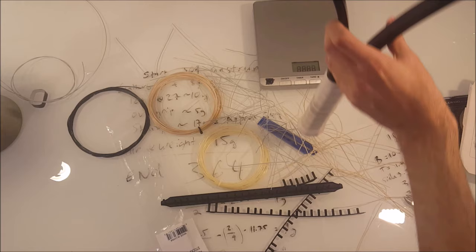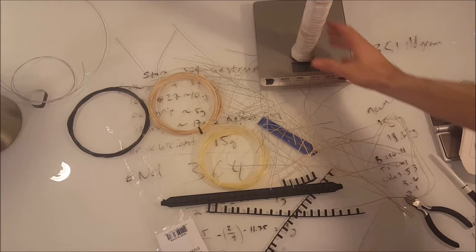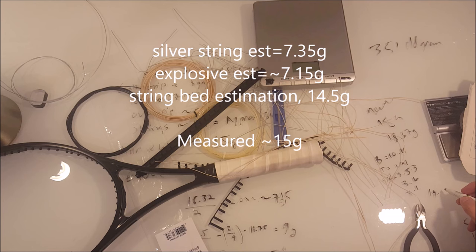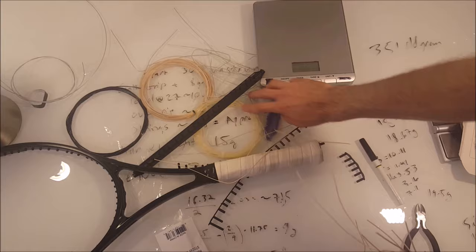So now first we'll just re-measure the stick without any strings on it, with all the weight added, just to get a ballpark number here. So 351. I have a ton of notes on the table. I might not point them out specifically, but I'll try to explain as we go. My estimation was about 14.5 grams for the string bed, as it was. And what I'm finding on the scale right now is it was about a loss of 15 grams, which means that my calculations are pretty ballpark accurate.